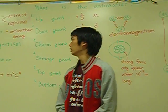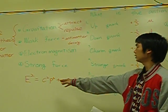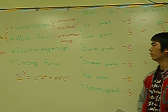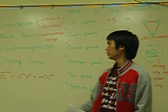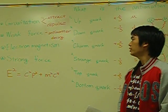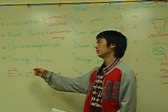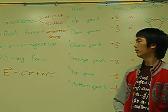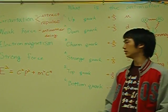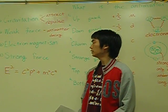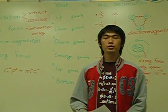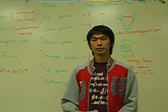According to Einstein, E squared equals C squared times P squared plus M squared times C squared. The E squared is always positive. If the energy is positive, E squared is still positive. However, if the energy is negative, E squared is still positive. So we can see the positive energy is matter, and negative energy is antimatter.